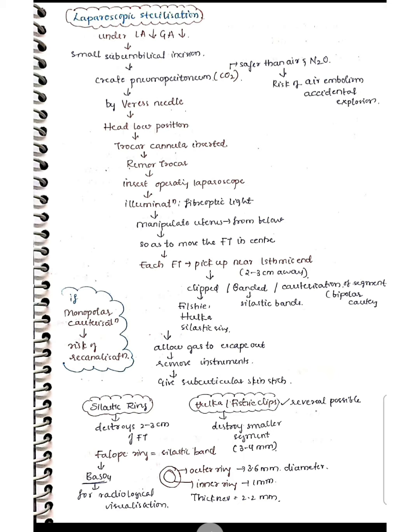Laparoscopic sterilization is the fourth method. It is done under local or general anesthesia. A small sub-umbilical incision is given, then a pneumoperitoneum is created with CO2 using a Veress needle. CO2 is safer than air because using air carries the risk of air embolism and accidental explosion. The patient is placed in the Trendelenburg (head-low) position.